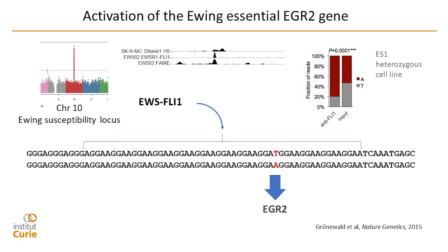We have now investigated the other GWAS loci, and interestingly, at at least three of these loci, we find this same pattern of polymorphism in microsatellite sequences. We don't know if this fully explains the epidemiological difference between African and European descent, but these are clearly polymorphisms that potentiate EWS-FLI1 effect and potentially its transforming activity.